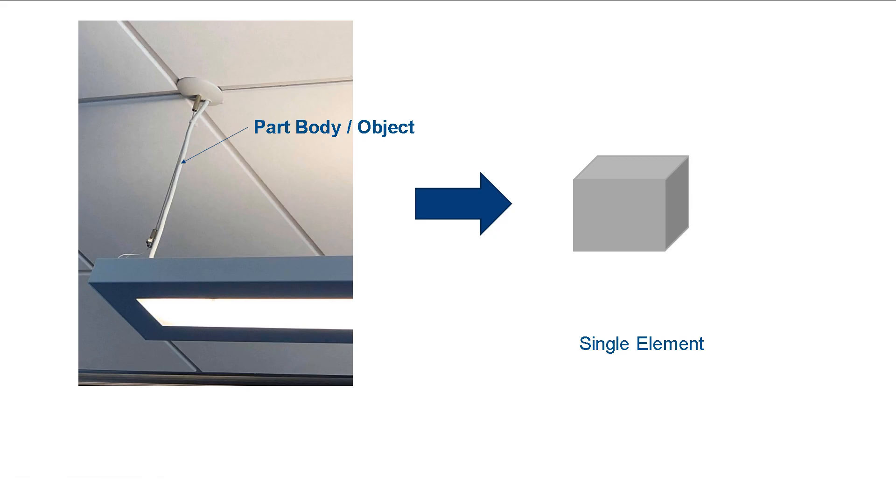To recap, an element is simply a section or part of a larger body or structure. This element, in conglomeration with other elements within the meshed body, can be used to approximate the solution with a high degree of accuracy.